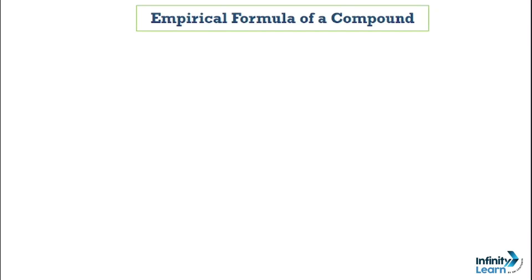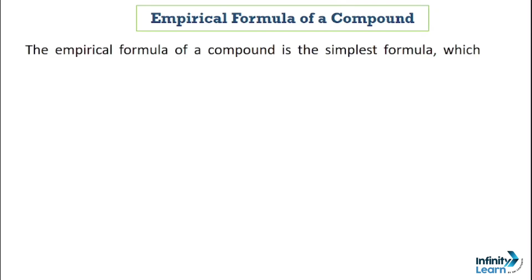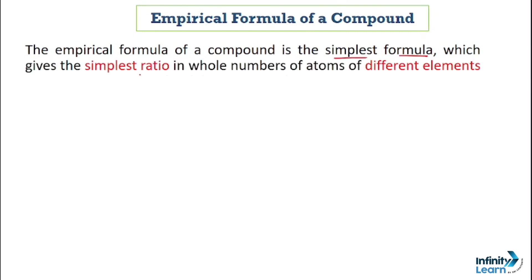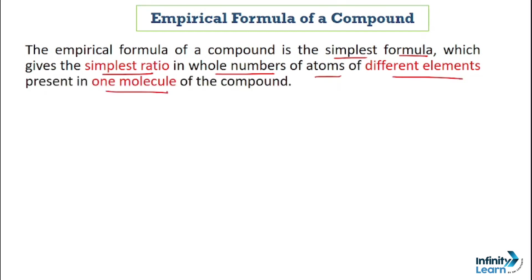Now let's talk about the empirical formula of a compound. The empirical formula of a compound is a chemical formula that gives the simplest whole number ratio of atoms of the different elements present in one molecule of the compound. Let's understand this with examples.